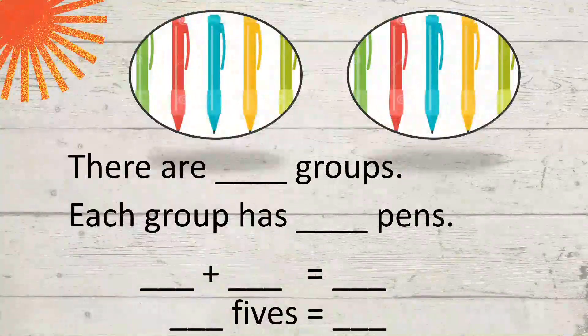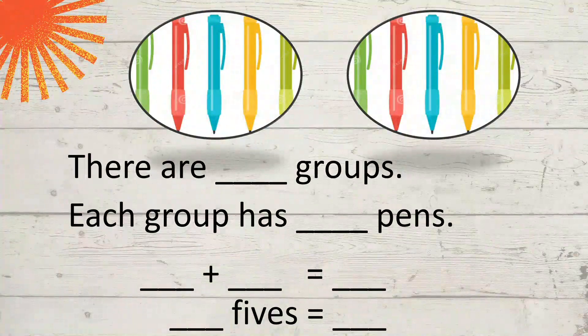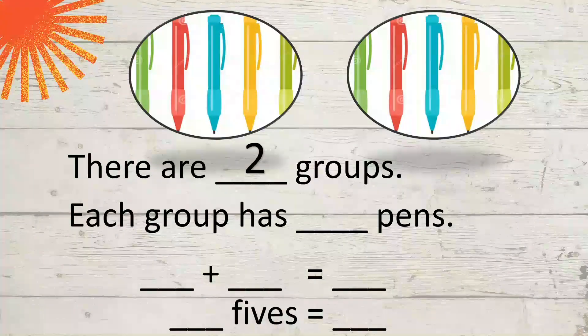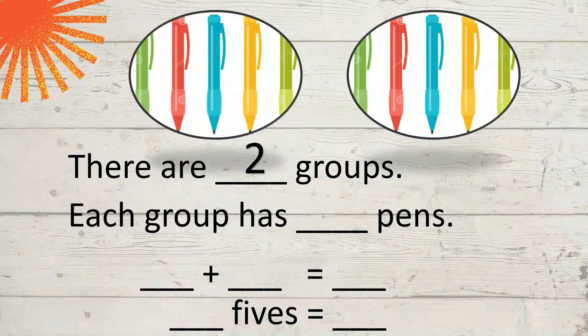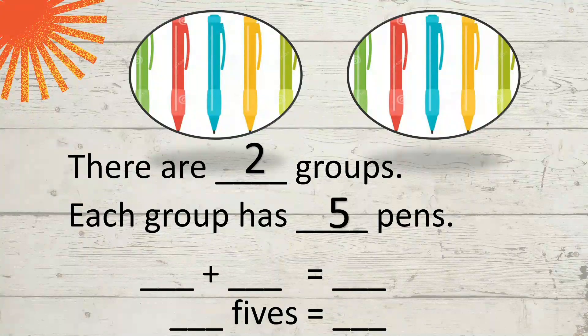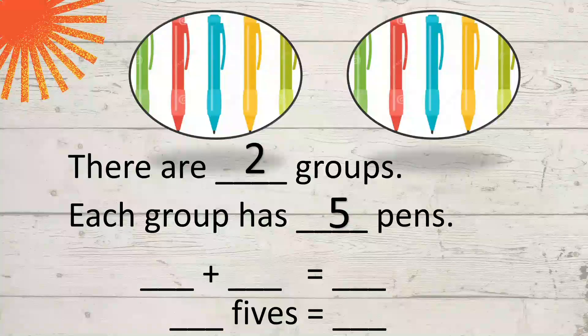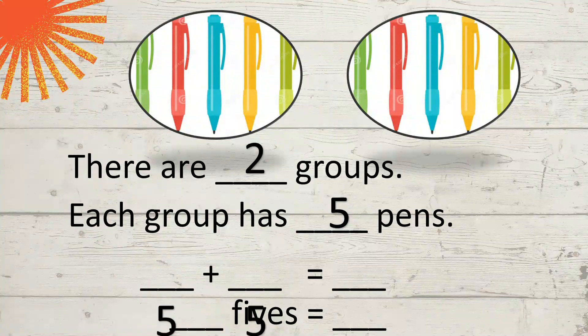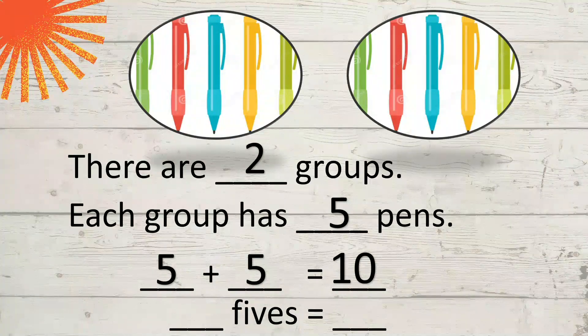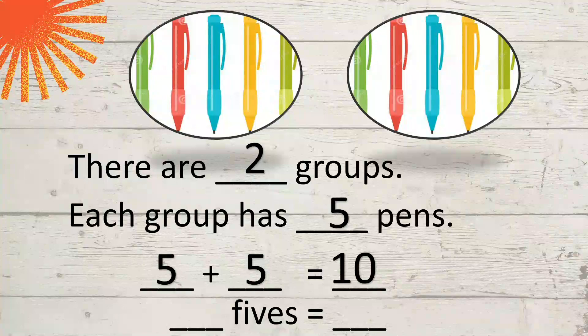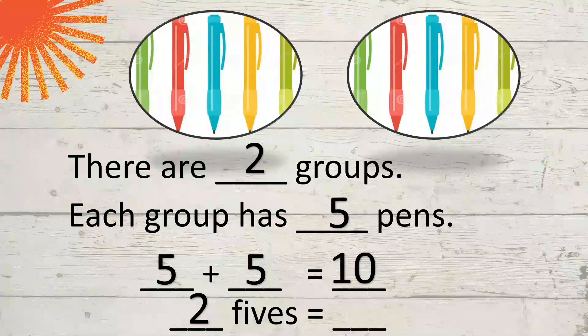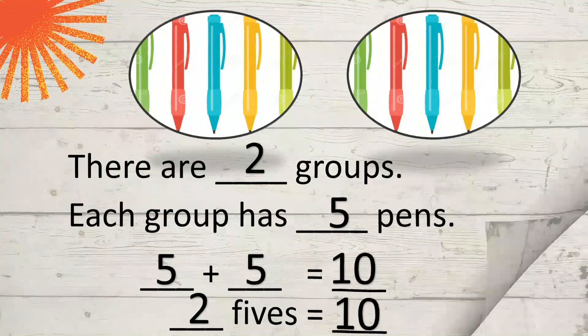Let's have this. Another example. How many groups can you see? There are 2 groups. And each group has how many pens? 5. Very good! So our addition sentence will be 5 plus 5 equals 10. And 2 fives, that means it's equal to 10. Very good children!